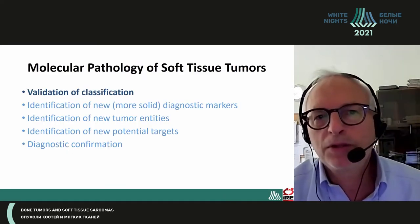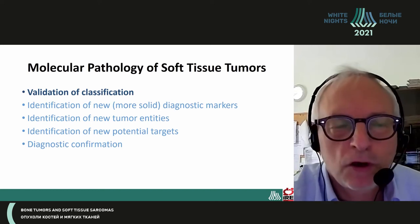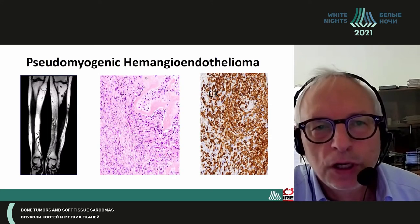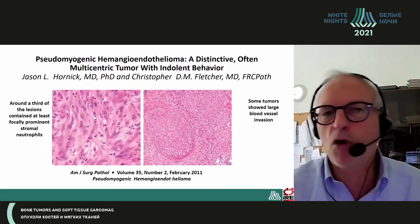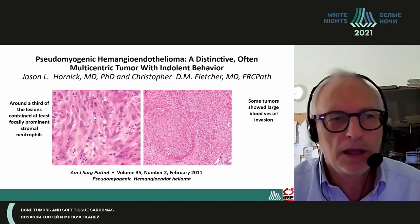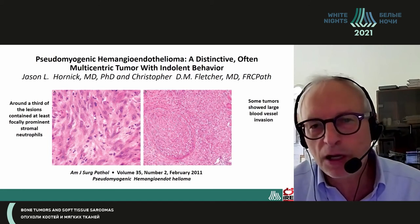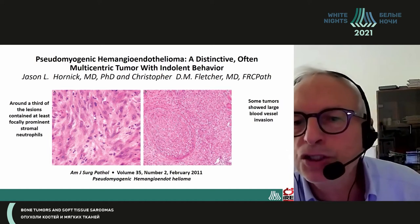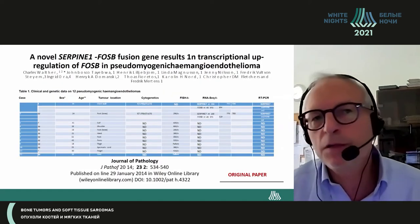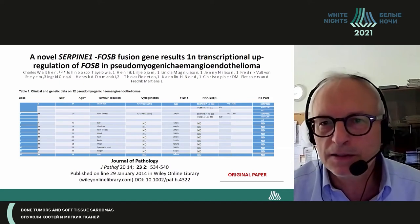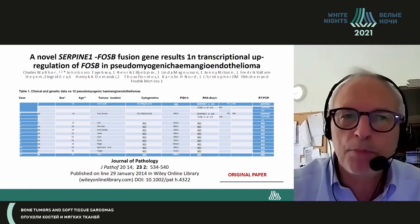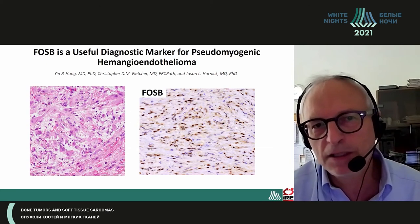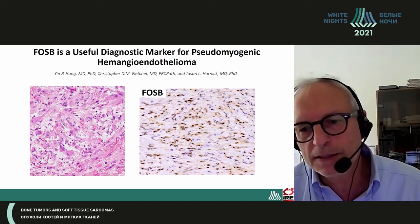So why is molecular pathology important for soft tissue tumors? First of all, for validation of a classification, such as in pseudomyogenic hemangioendothelioma, which is a distinctive multicentric tumor with indolent behavior. About a third of cases contain at least focally prominent stromal neutrophils, and some of them invade the vascular structure present in the tumor. A novel SERPINE-FOSB fusion gene has been identified in this lesion, which led to upregulation of FOSB, and subsequently a FOSB antibody has been developed and is now very useful for identifying this kind of tumor.